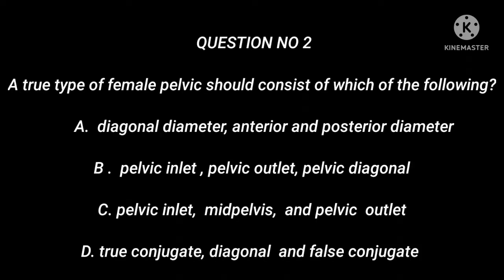Question number 2. A true type of female pelvis should consist of which of the following? A. Diagonal diameter, anterior and posterior diameter. B. Pelvic inlet, pelvic outlet, pelvic diagonal. C. Pelvic inlet, mid pelvis, and pelvic outlet. D. True conjugate, diagonal and false conjugate.